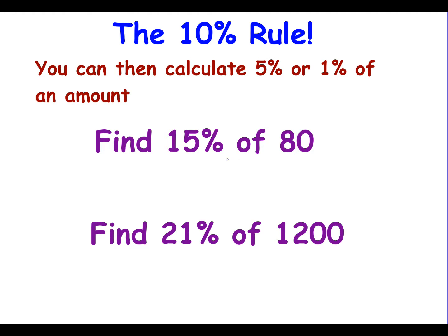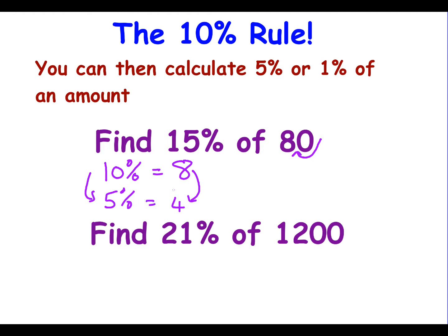To find 15% of 80, my starting point is to find the 10% amount. Divide by 10: that's 8. To get 5% I halve it to get 4. I know 10% is 8 and 5% is 4, so adding them together, 15% of 80 is 12.